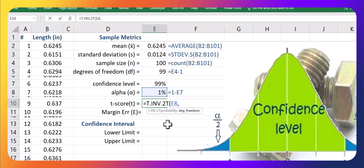So that 1% in this case. And then we go grab our degrees of freedom, which again is that n minus 1.